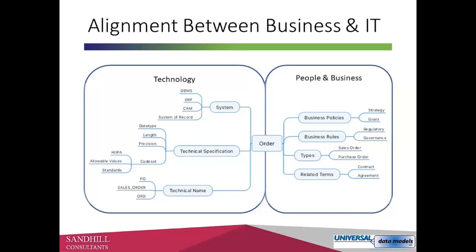On the technical specifications side — what's the data type, its length, its precision, is there a code set, does it have allowable values, does it have standards like HIPAA? And then the technical name, because the technology world tends to use shorthand when naming things due to database or technical limitations — they might abbreviate purchase order as PO or sales order as ORD. These technical shorthand ideas don't lend themselves to business people. On the right-hand side, business people are interested in knowing: what's the policy around orders, what are the business rules, what are the regulatory rules around security and governance? An order can be different types — sales order, purchase order, work order — these are subtypes of the concept of an order, and an order could be related to broader concepts like a contract or an agreement.